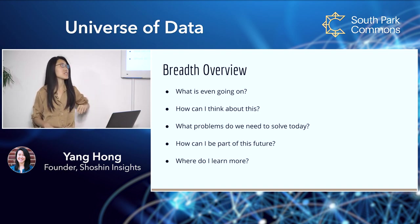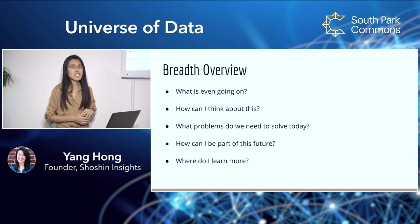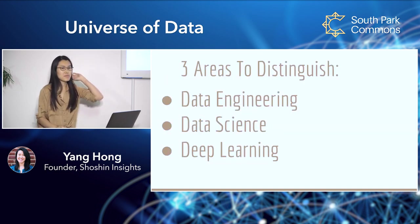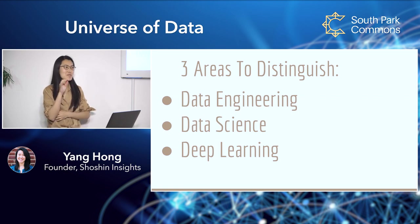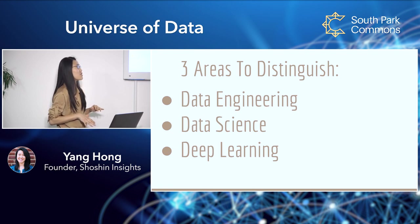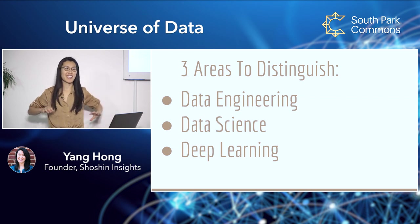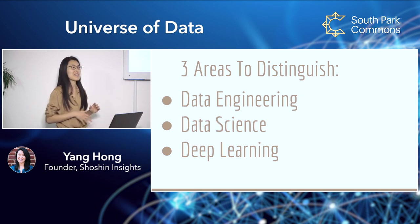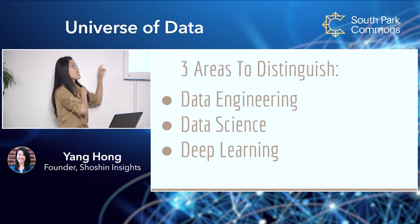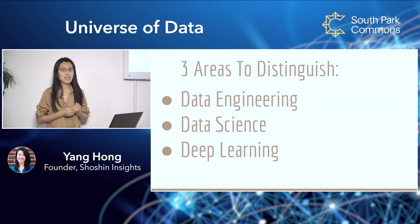I'm going to attempt to answer questions like: what is going on right now, different ways you can think about it, problems we need to solve today, how you can be a part of this, and places to learn more. First, there are a ton of terms. A lot of times people throw out data science, machine learning, and AI, and it's very unclear what that encompasses. I like to think of three somewhat distinct terms: data engineering, data science, and deep learning.